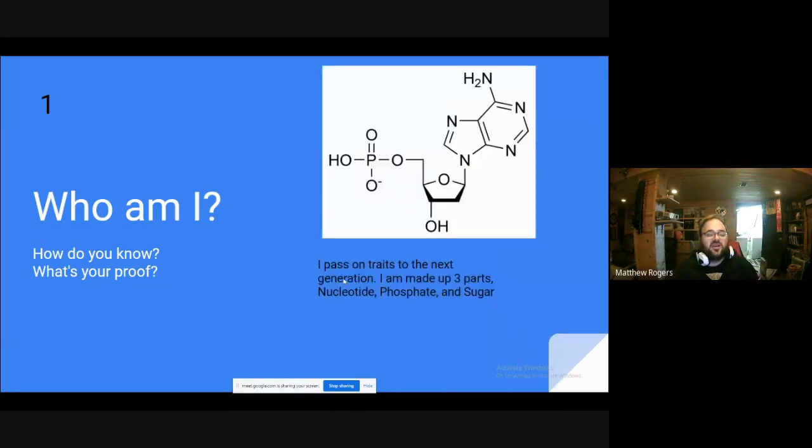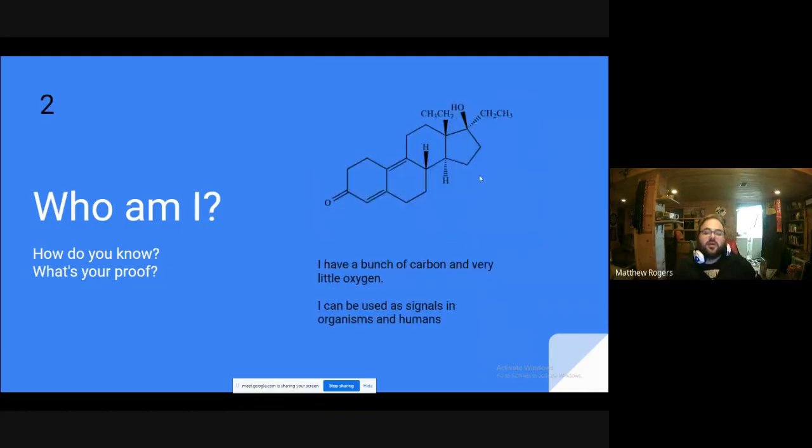So we're restarting here. Obviously each one of these now has a little bit more information. You can kind of go through and figure out what these mean for each one. Obviously this guy passed on traits to next generation, so obviously I'm trying to point you to nucleic acids. And then I'm made up of three parts - nucleotide, phosphate, sugar. Hopefully you recognize nucleotides, the monomer, and that's three distinct parts.